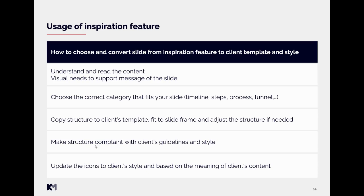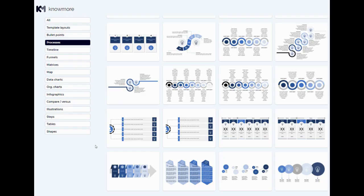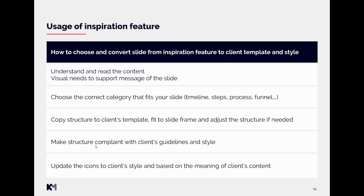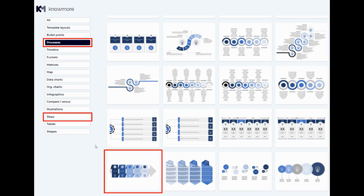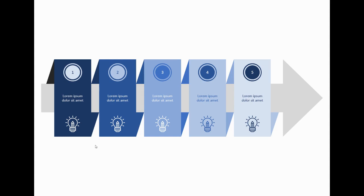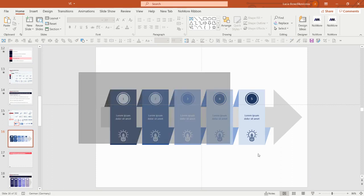Now we will look at a small example of how to turn a slide into a structure from the inspiration feature. Since I understand this slide — that these are certain steps in the process of how to choose and convert a slide successfully — I can choose from the categories 'steps' or 'processes'. I decided to use a structure that has five points, since my slide also has five points.